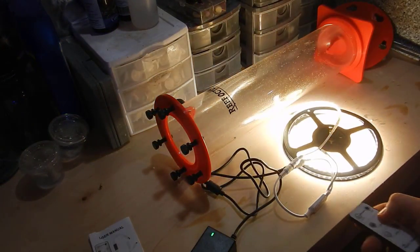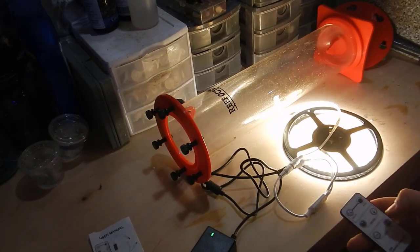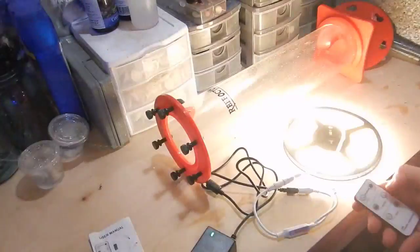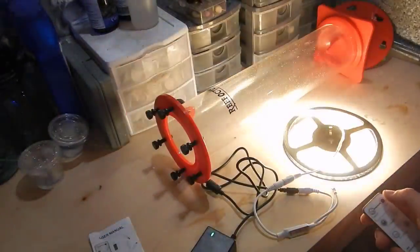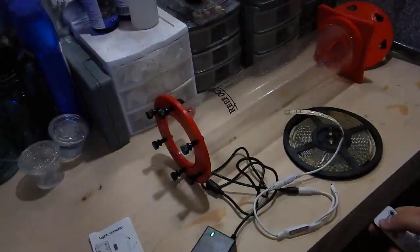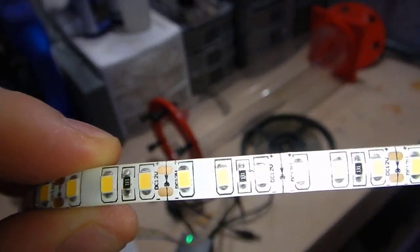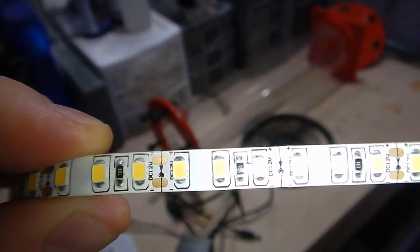The IR control between the fixture and remote, you kind of have to be within two feet of it to get it to even work. It will work for now at least until I get the apex hooked up to it. Here is a closer look at the light strip just in case you needed to cut it.